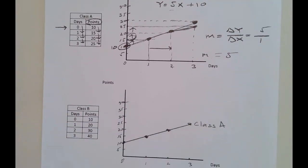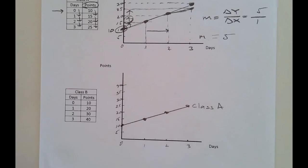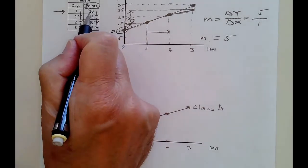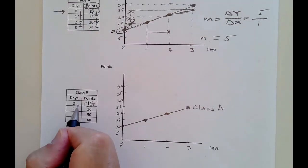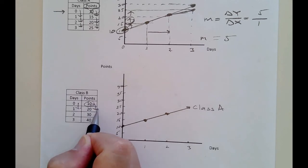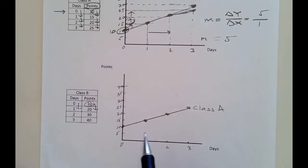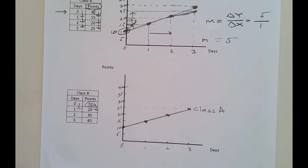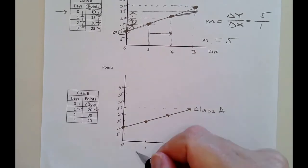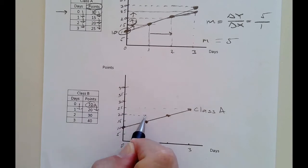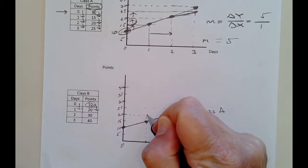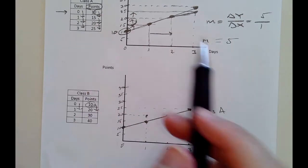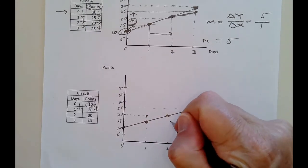Down here is another class — class B. This might be a different class I teach. If no one comes to class, they get 10 points again — same y-intercept. But every time they come to class, they get not 5 more points but 10 more points. So class B starts at the same point, but on the first day they're at 20, on the second day 30, and on the third day 40 points.